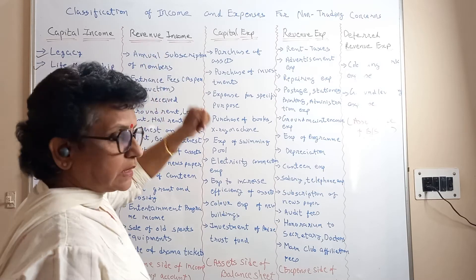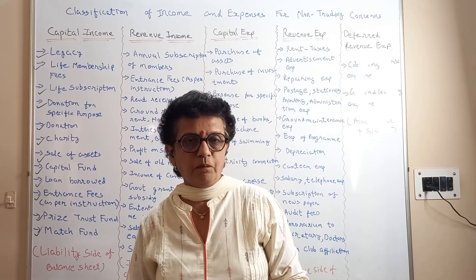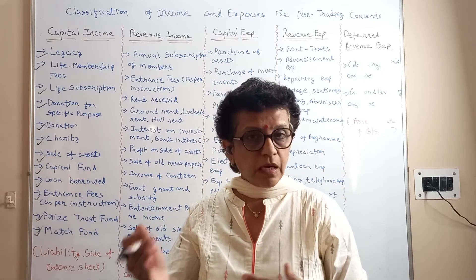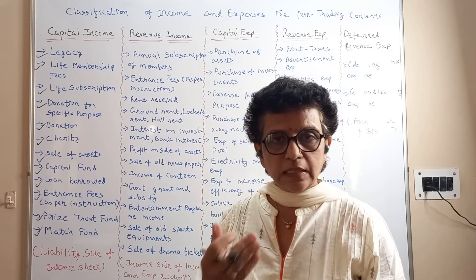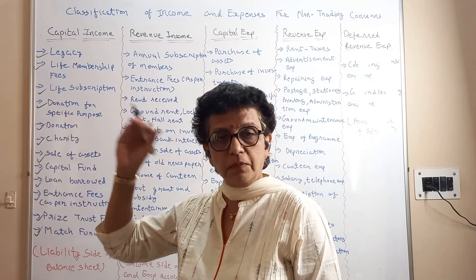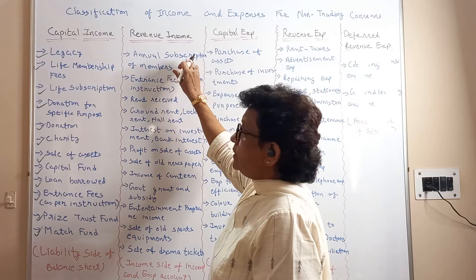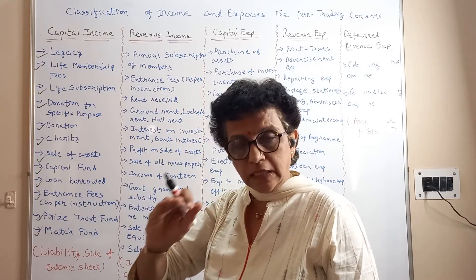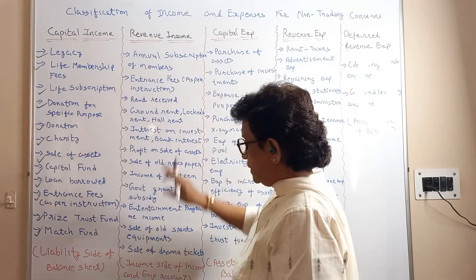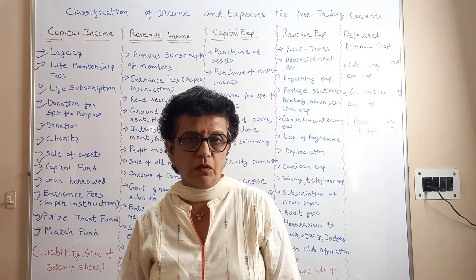Now second: revenue income. Revenue means money. To survive you need regular income — a regular flow of funds coming into the institution. So revenue income means your routine, regular income flow. All these revenue income items are going to be recorded and shown on the income side of the income and expenditure account.